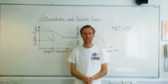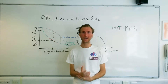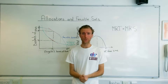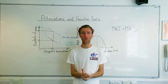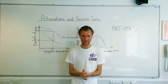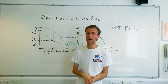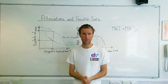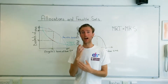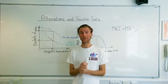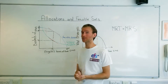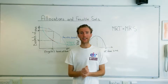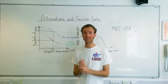Hi! Today we're going to talk about allocations and feasible sets. We're going to use an example from the Core Economics Project. The example is Bruno and Angela. Bruno is a landowner and a slave owner, and he owns Angela as a slave, and he forces Angela to work his land.